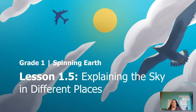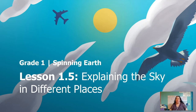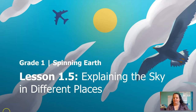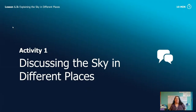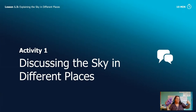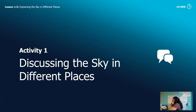Hello first graders, it's Miss Ward again. Welcome to the last lesson of chapter 1: 1.5 Spinning Earth. Today we are going to explain the sky in different places. Let me start by telling you what you need today. You need someone to talk to — I'm going to talk to Lavender. If you don't have someone in your house, you can talk to your thumb or a stuffed animal. You also need something to write with and something to write on.